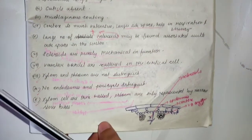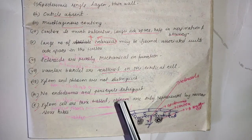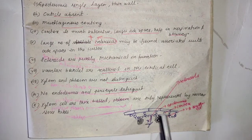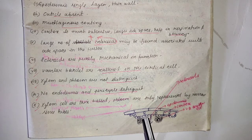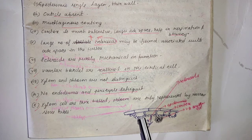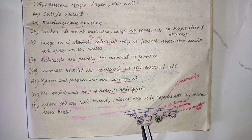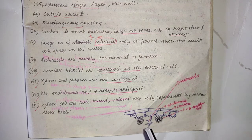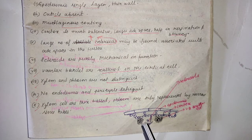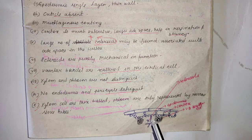In the stem of floating hydrophytes, the epidermis is a single layer. Inner to the epidermis, cortex is present, which is many layers in thickness and contains a large number of air spaces and sclereids. Sclereids serve a mechanical function, and the vascular bundles are scattered in the cortex region.